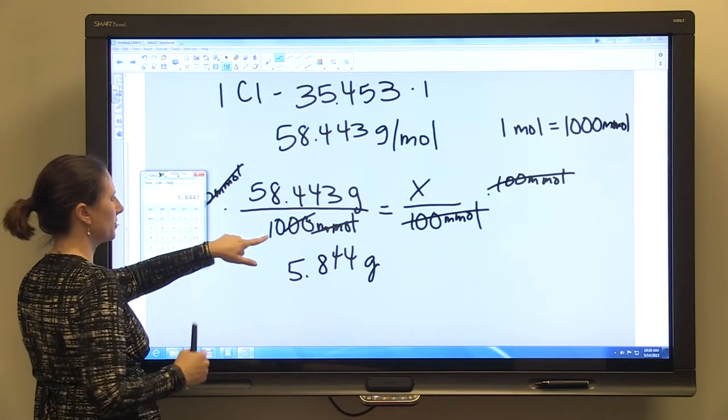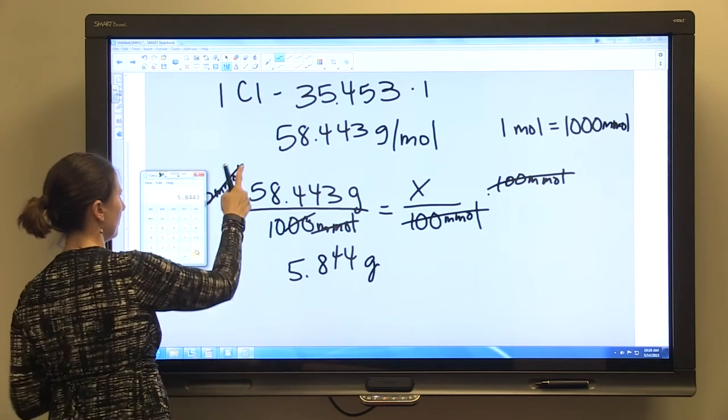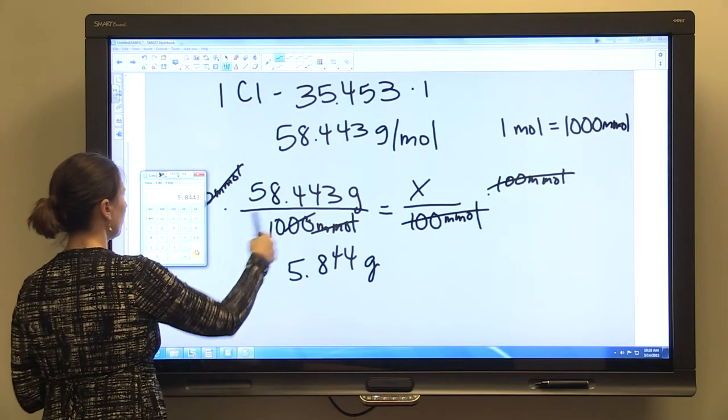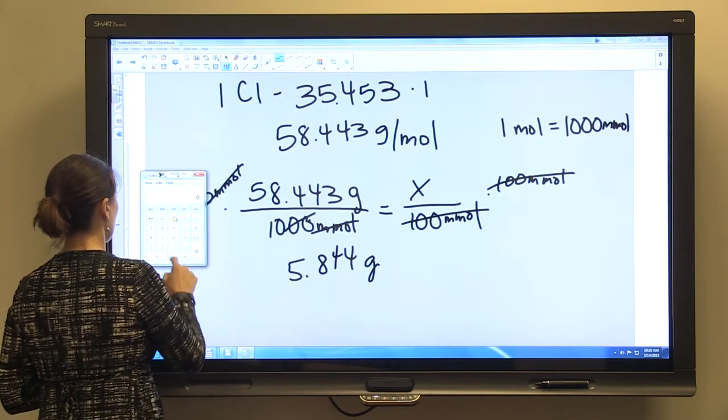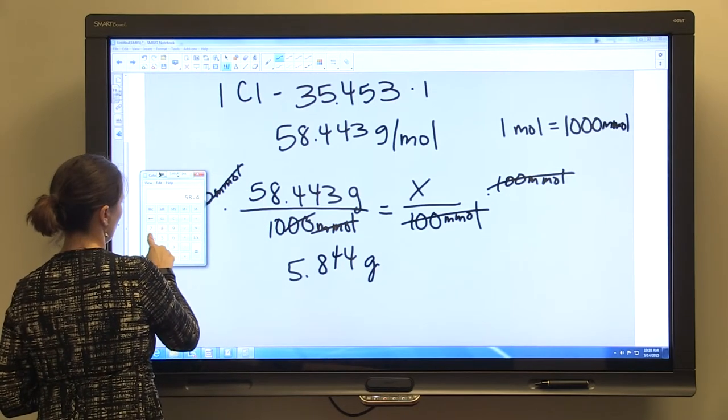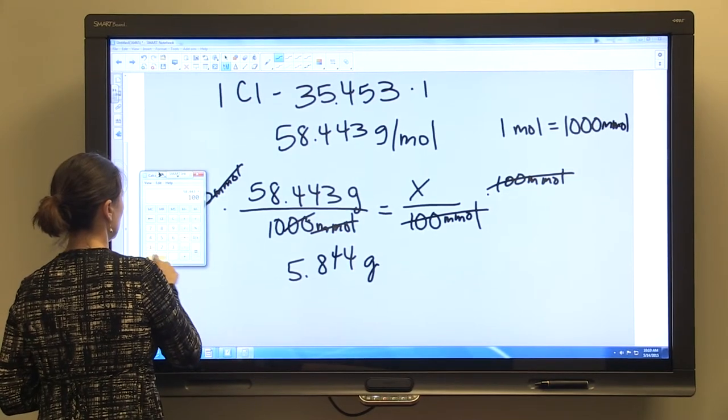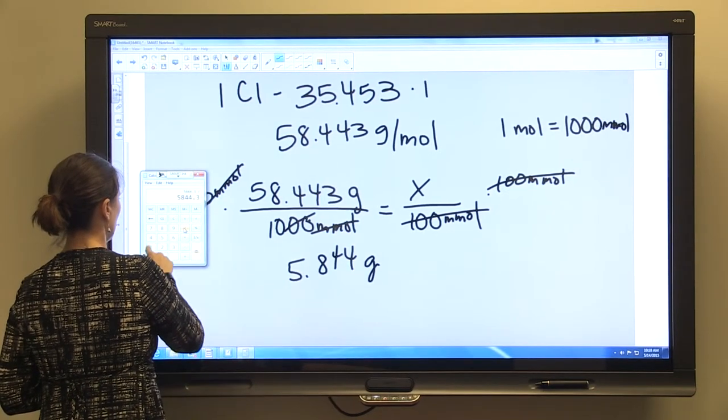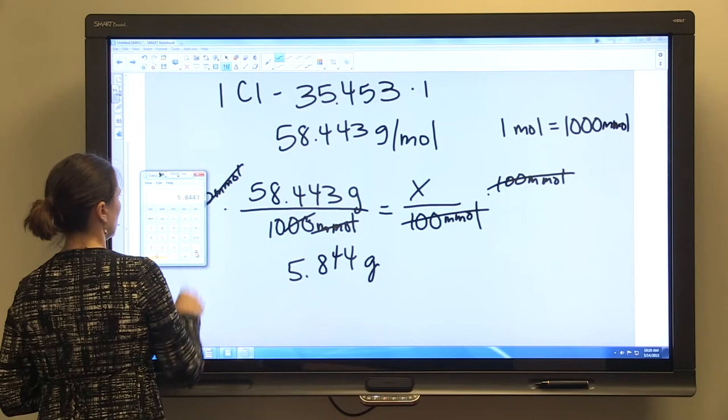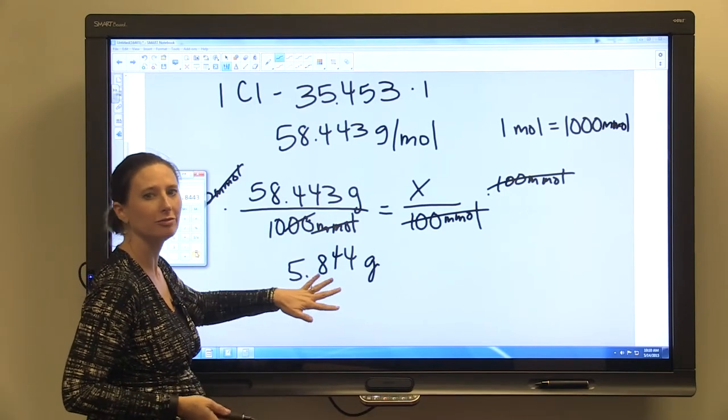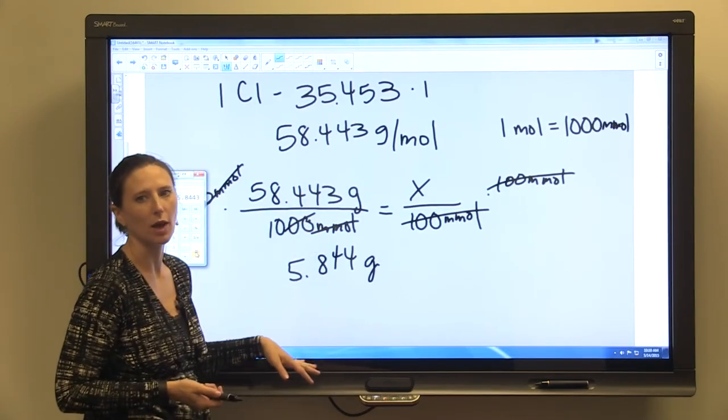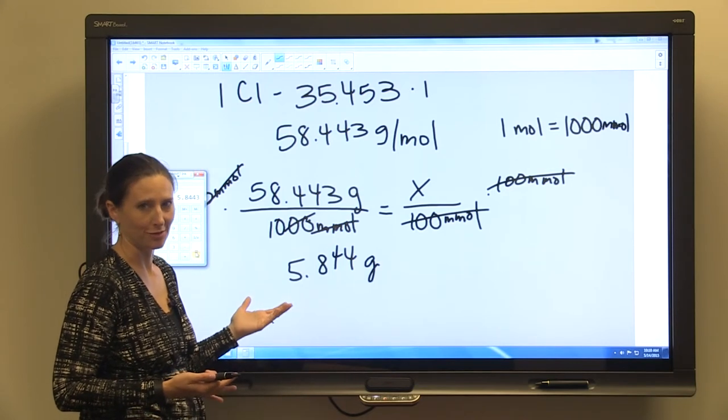If you don't feel comfortable with this kind of simplifying, you can see that 58.443 times 100 divided by 1000 is still going to give you the same answer. So you can feel comfortable doing it either way, whatever works the best for you.